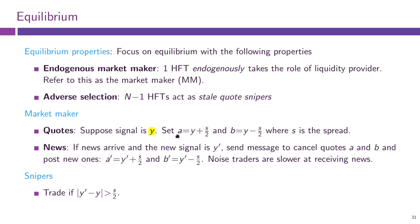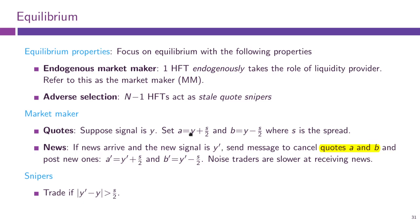The signal is y, and the bid and ask prices are given by y plus or minus s/2, where s is the spread. When news arrive and the asset value is known to have changed from y to y', the market maker will immediately send a message to the exchange to cancel their old quotes a and b centered around the old y, and submit new quotes a' and b' centered around the new value y'.